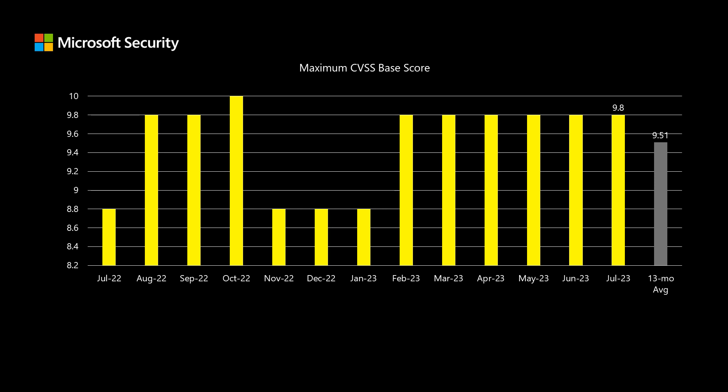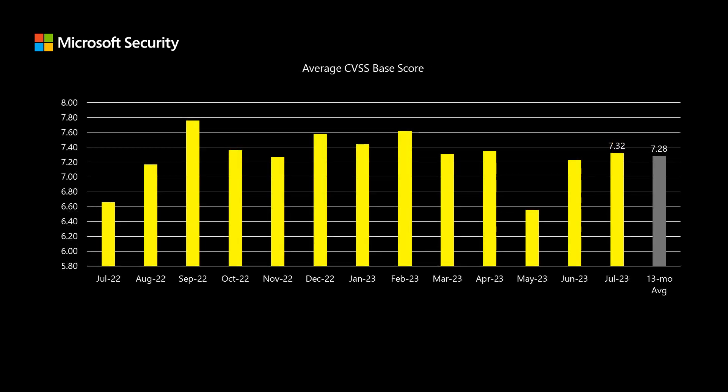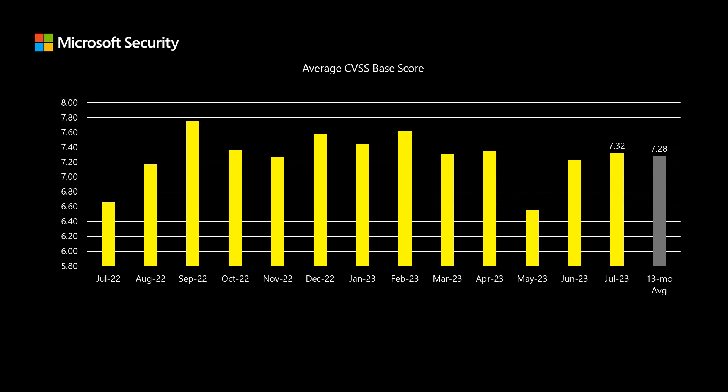Next, I'll talk about scoring. Microsoft uses the industry standard Common Vulnerability Scoring System, or CVSS. This is a scale between 1 and 10, where 10 is the most severe. This month, we have a few vulnerabilities that come in at 9.8 on a scale of 10. We've been averaging right around 9.5 for that high point over the last 13 months. The average score across all 130 CVEs comes out at around 7.32, and we've been averaging about 7.28, which is right in line with the average.